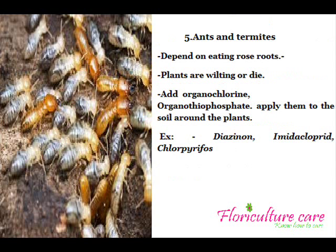ETS and Termites depend on eating rose roots, causing most rose plants to wilt or die. To control the damage from these insects, it is important to apply organochlorine or organophosphate pesticides. Apply them to the soil around the plants. Use pesticides such as Diazinon, Imidacloprid, and Chlorpyrifos.